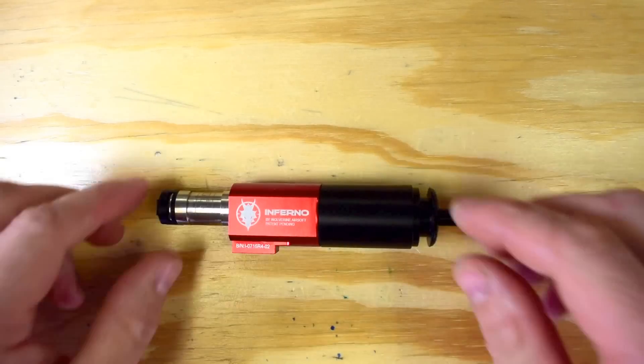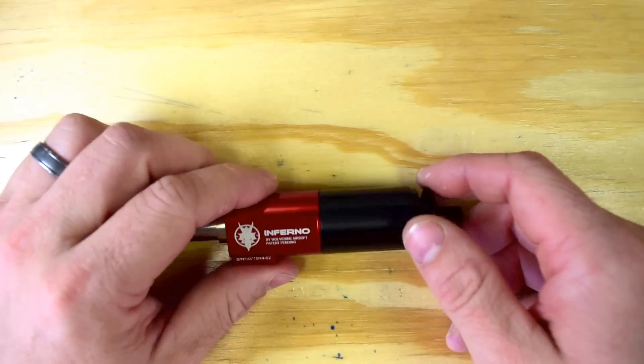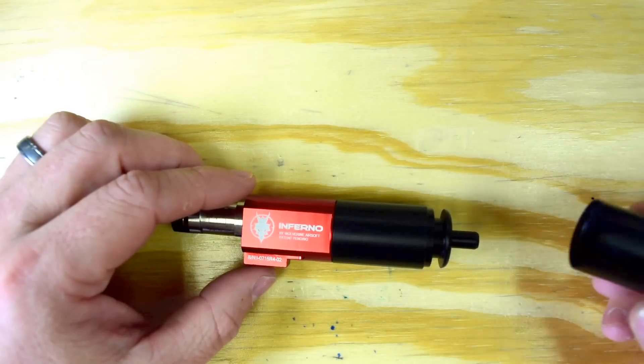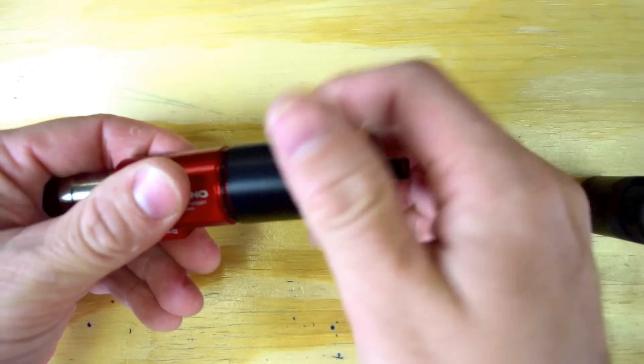So, we have our Inferno here, and we had it in a V2, let's say, an M4, and we want to swap it over to an M14. You're going to get this guy here, and literally all you have to do to swap it is unscrew the front end.